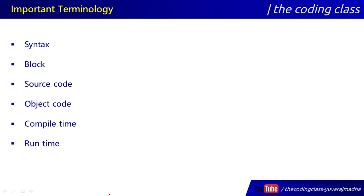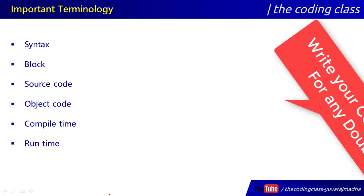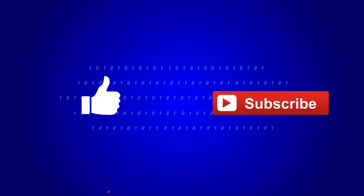Run time means the time the CPU takes to execute the program. When you run the program, that time is called run time, and it depends on the CPU. If you liked this video, please press the like button, and if you haven't subscribed, click subscribe. Share this video — more concepts will be covered in the next classes. Thank you.